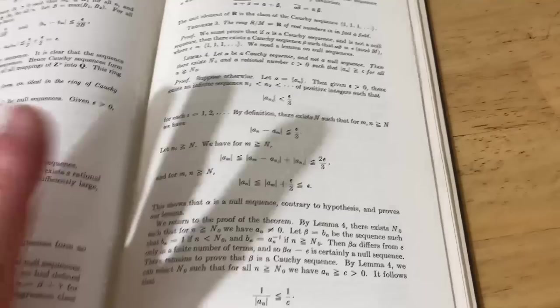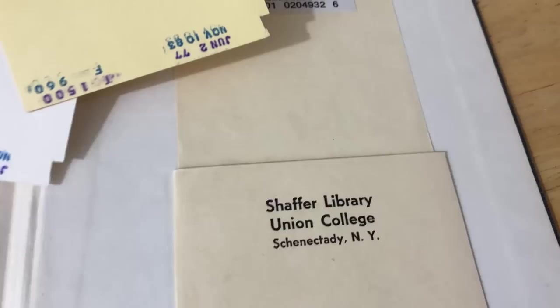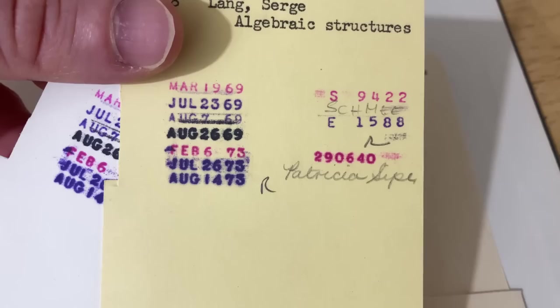You can see dates from when people checked this out. Union College Library. Cool. Schaefer Library. Union College. Wow. 1969. Also in 73. Also in 75. You wonder, you know, where these people are who checked out these books and what they did with the book.